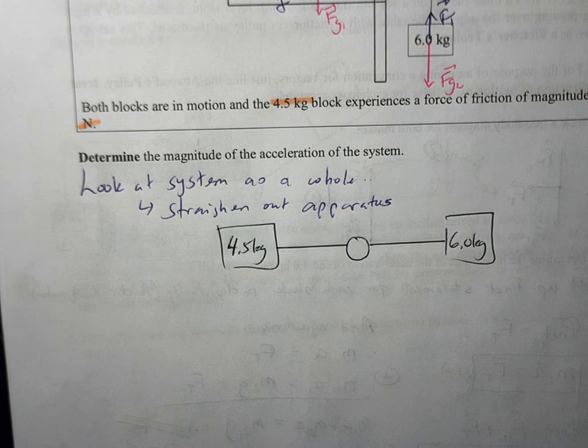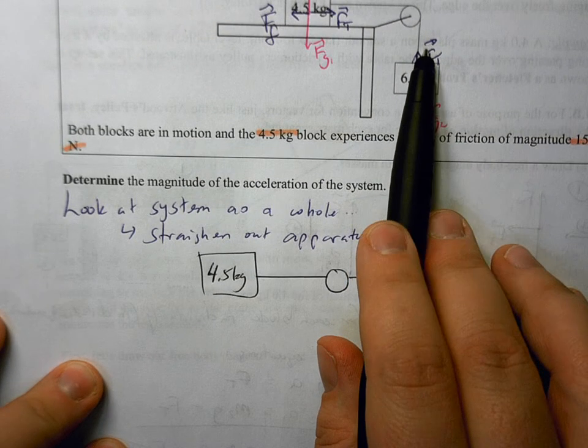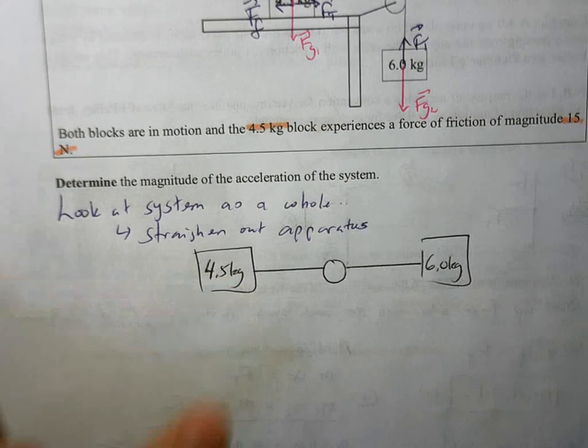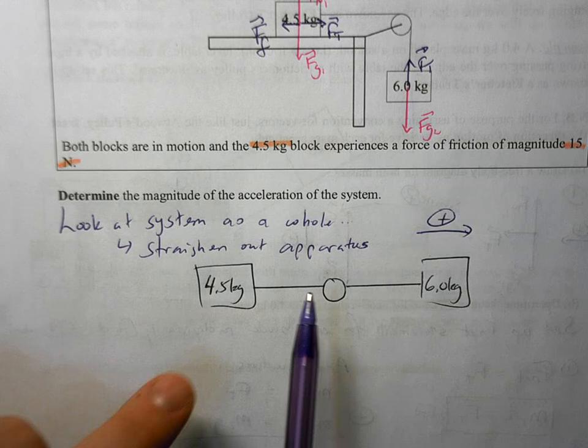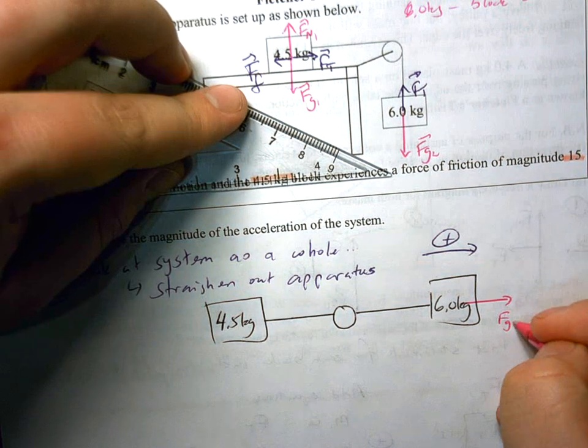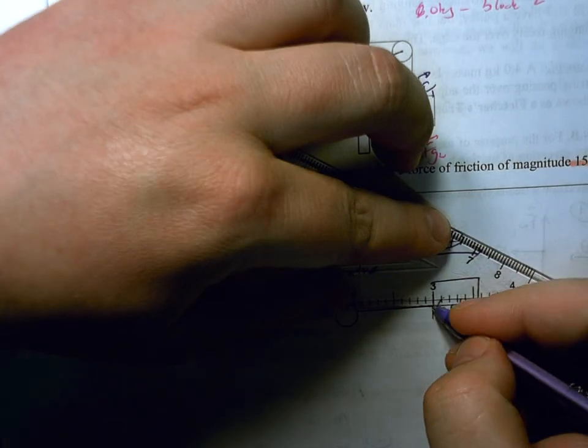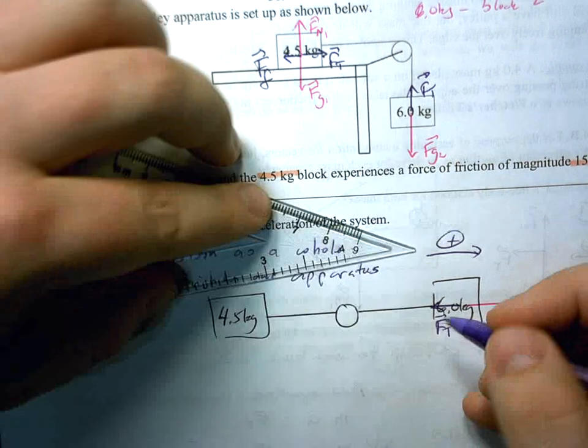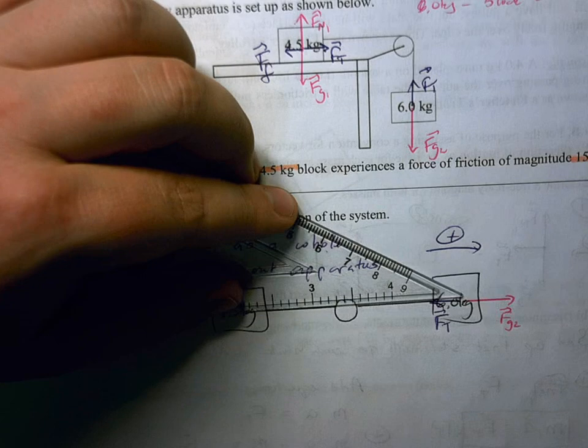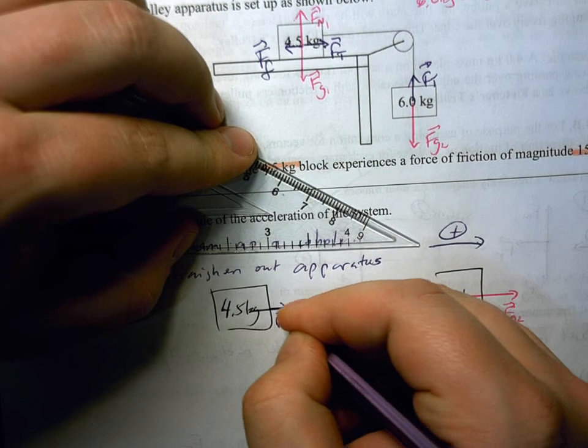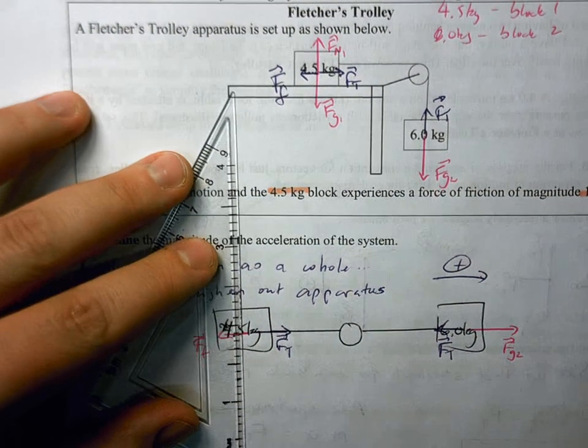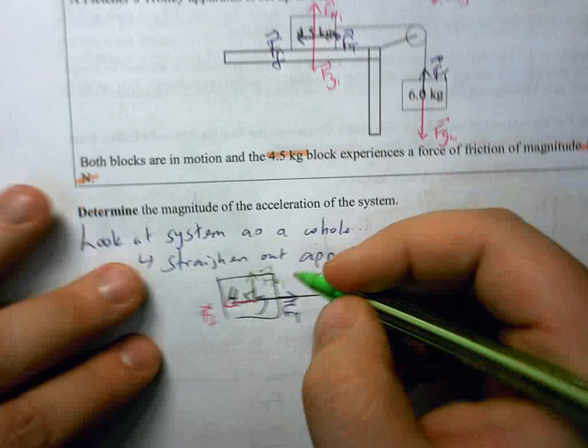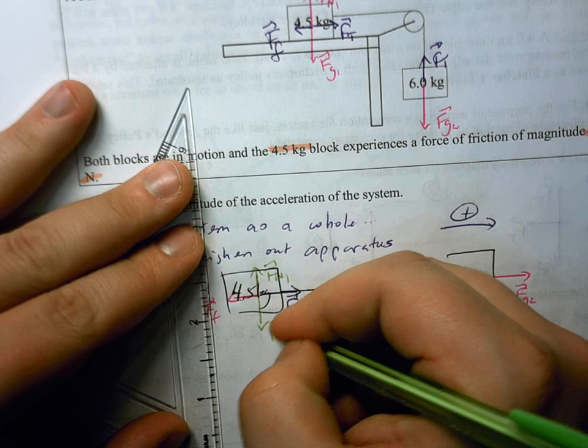Now we're going to call the direction of motion positive. The 6 kilogram block is going to dictate the direction of motion. If this is going down, this whole system is going to get pulled to the right. So I want to call this right direction to be positive. Once again, we can label all of our forces directly on this diagram. So I have this FG2 here, and then I have this force of tension. And then I also, on this first block here, I have this force of tension once again. I have this force of friction that's trying to slow this thing down. And then, of course, we have our two forces in the vertical direction here. So I have this normal force 1, and I have this FG1.